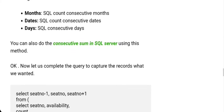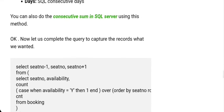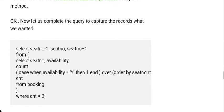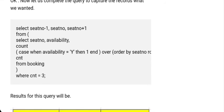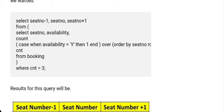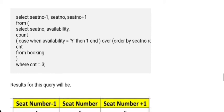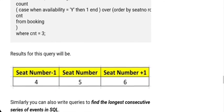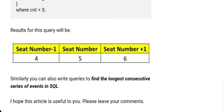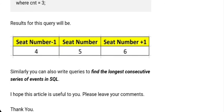Coming down, you can frame the entire query by placing the inner query inside an outer query. As mentioned, you need to select seat number minus 1, seat number, and seat number plus 1 from the inner query where the count equals 3. Finally you get the output showing seat number minus 1, seat number, and seat number plus 1 as 4, 5, and 6.